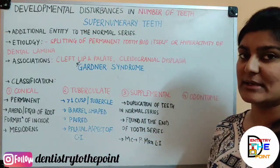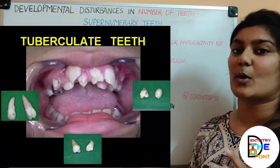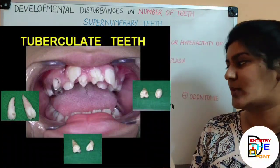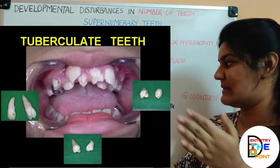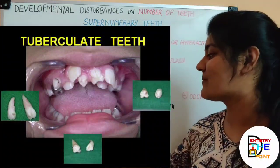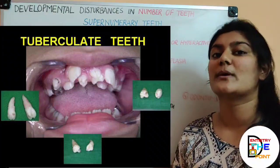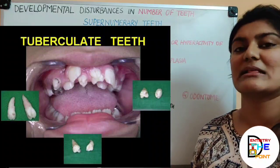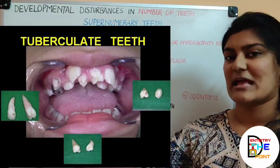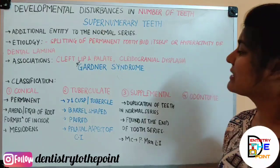The second type is tuberculate. As the name suggests, it has more than one cusp or tubercle, giving it a barrel shape. It usually occurs in pairs and is seen in the palatal aspect of the central incisors. Importantly, this tooth usually delays the eruption of the permanent incisors. The conical type, by contrast, may cause rotation or displacement but does not typically delay eruption.